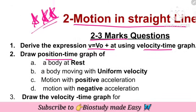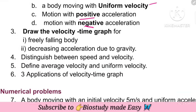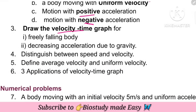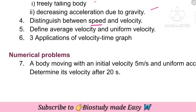Also, position-time graphs are asked separately for 2 marks each: body at rest, moving with uniform velocity, motion with positive acceleration, motion with negative acceleration. Next, velocity-time graph for freely falling body and decreasing acceleration due to gravity. Also, difference between speed and velocity.